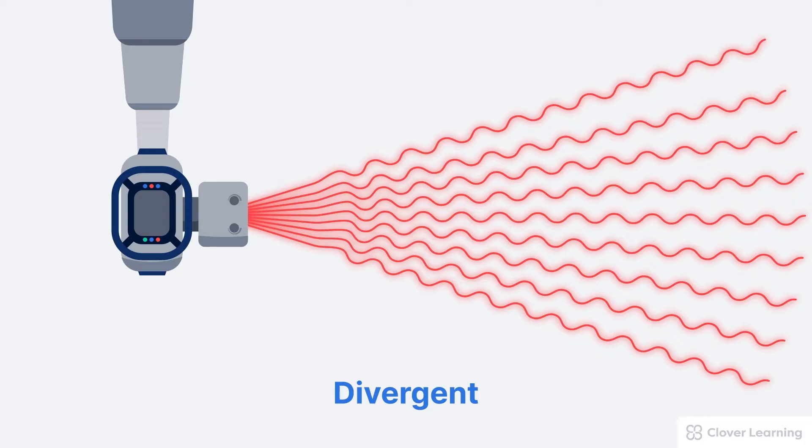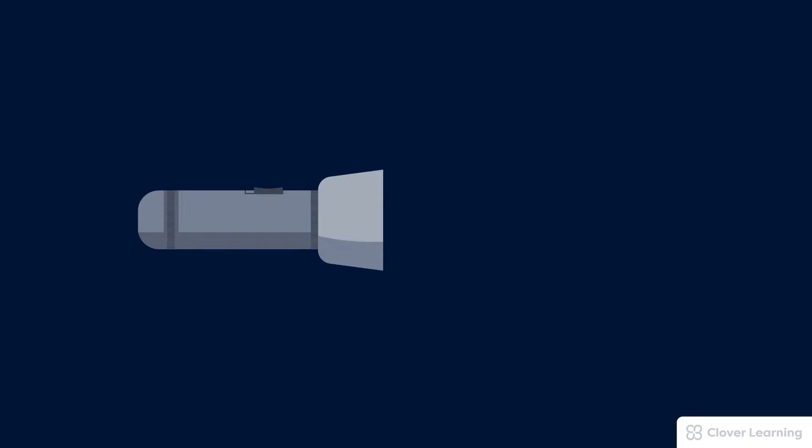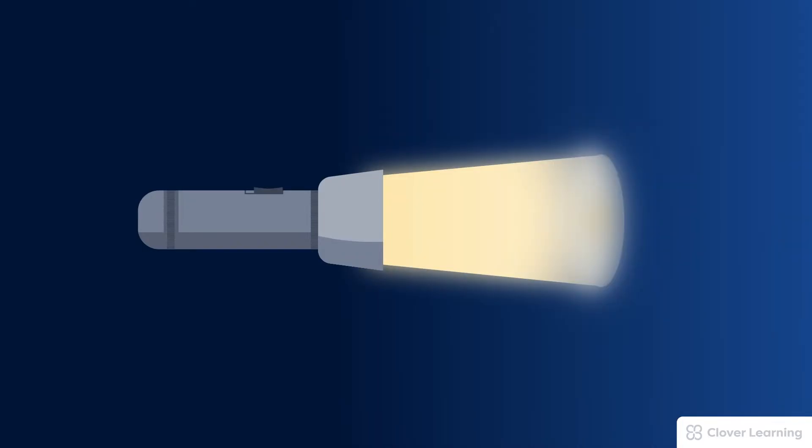Here's an analogy: a flashlight has a divergent beam just like the X-ray beam. In other words, the brightness of the flashlight depends on how close you are to the light.